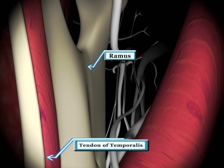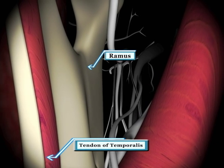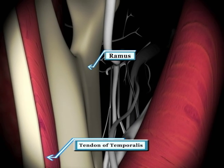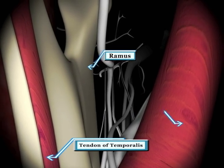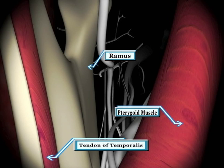For the remainder of the tour, we'll be traveling close and parallel to the mandibular ramus. The relatively large medial pterygoid muscle will be just medial to the needle.